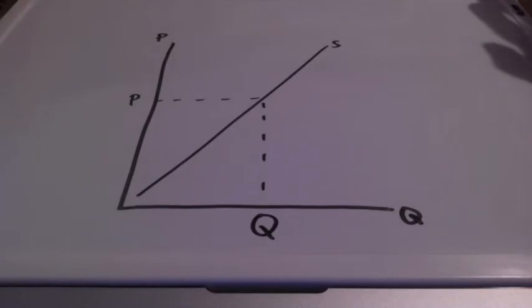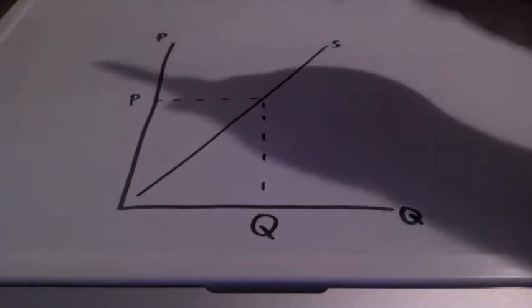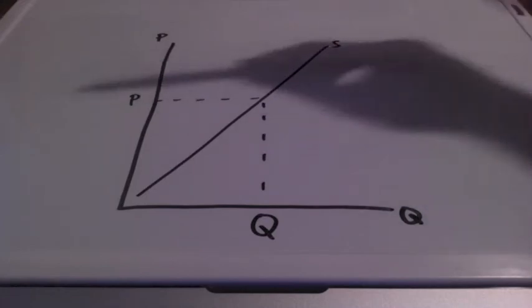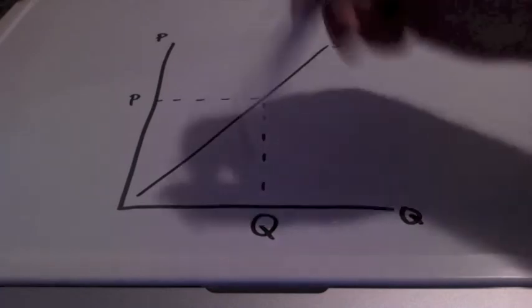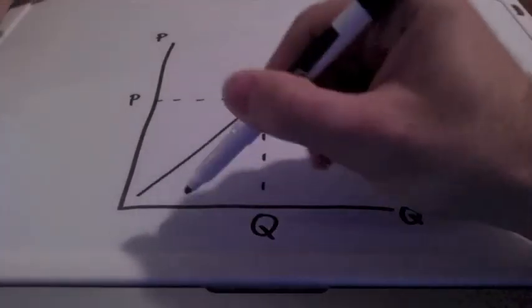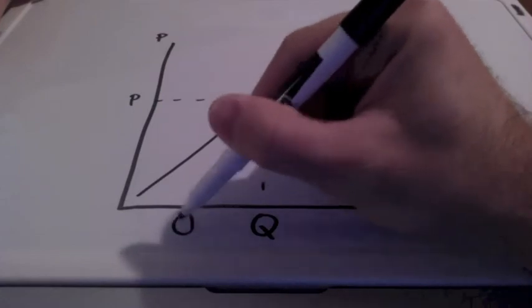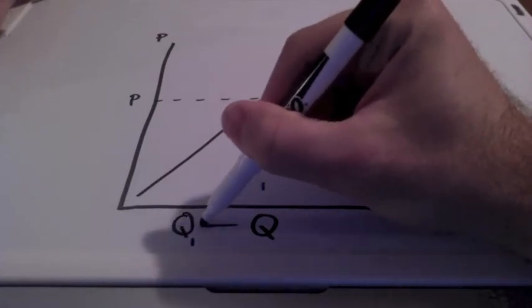So remember with the supply curve, we associate price with cost of production. Let's say if a firm chooses to produce less of a good, so we are moving to the left. If a firm is going to produce less, we're moving to the left.